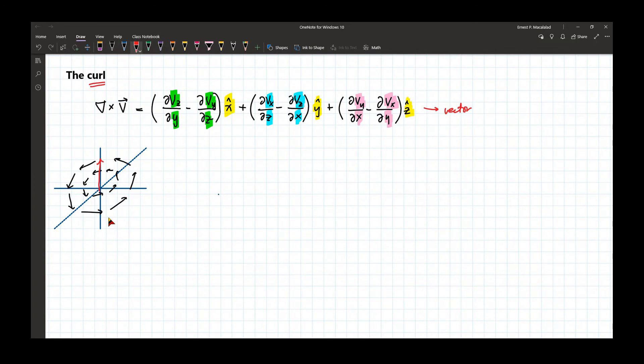or the vector field have a curling effect. So how do I mean by that? So for example, the vector field is like this. See, the vector field is like this.